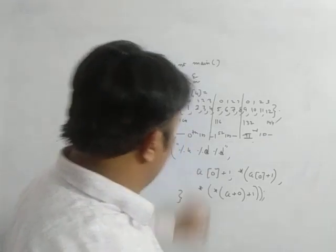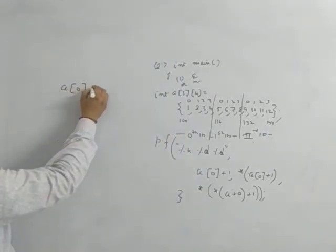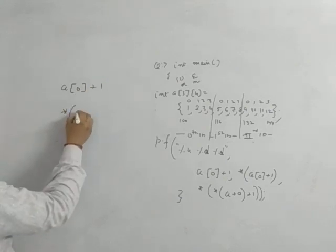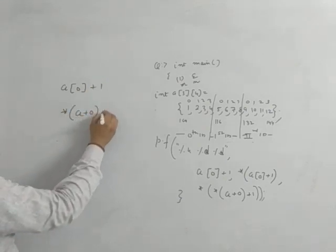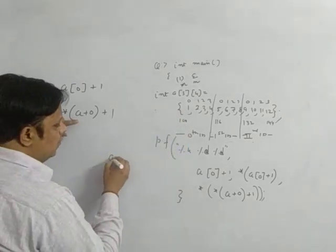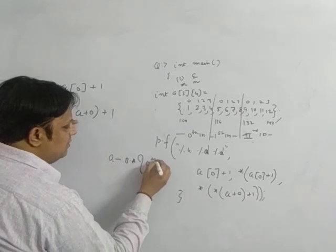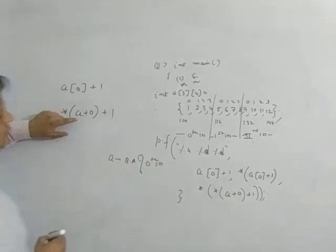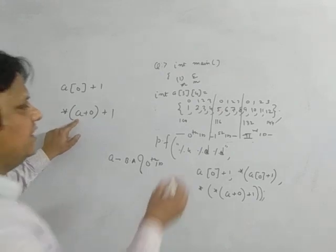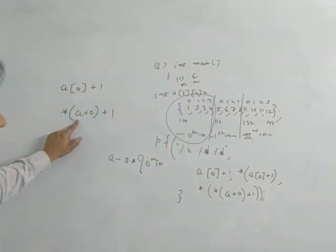Now you are printing a 0 plus 1. So what do you mean by a 0 plus 1? a 0 plus 1 is nothing but it is equal to star of a plus 0 plus 1. Right. So what is a in case of 2D array? I told you many times it is base address of 0th 1D array.